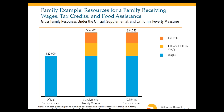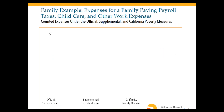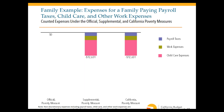Under the official measure, no expenses are taken into account at all. Under the supplemental and California measures, payroll taxes, work expenses, and childcare expenses are subtracted — reducing resources by over $12,000.